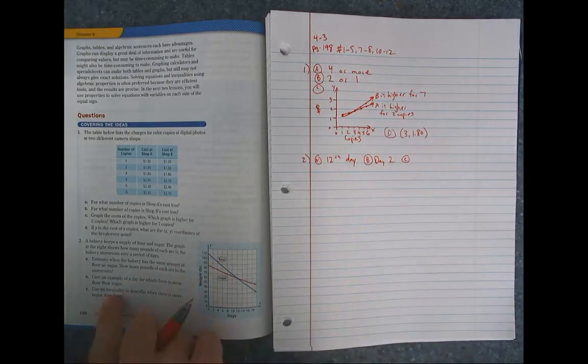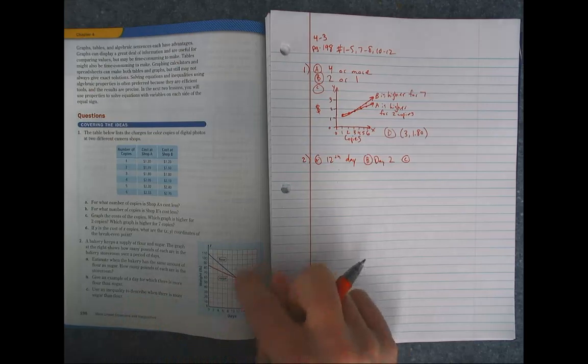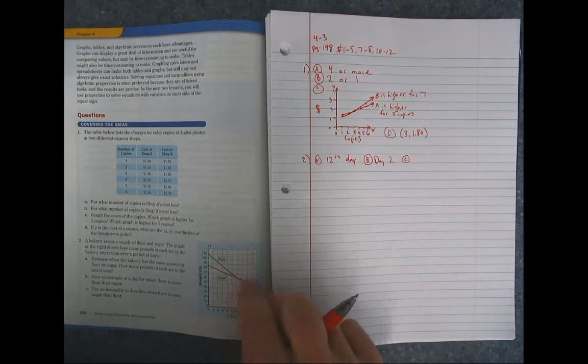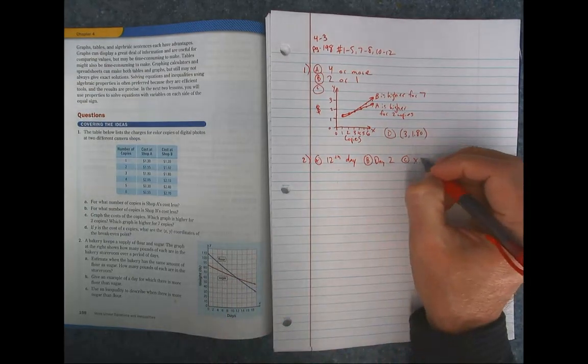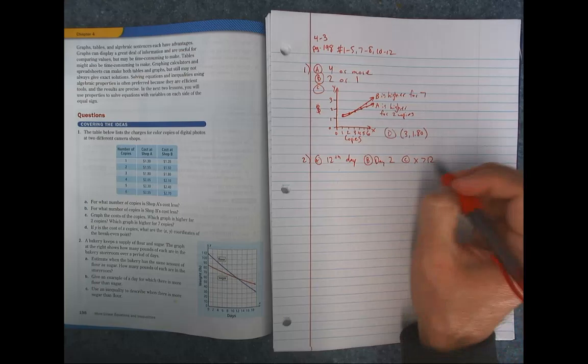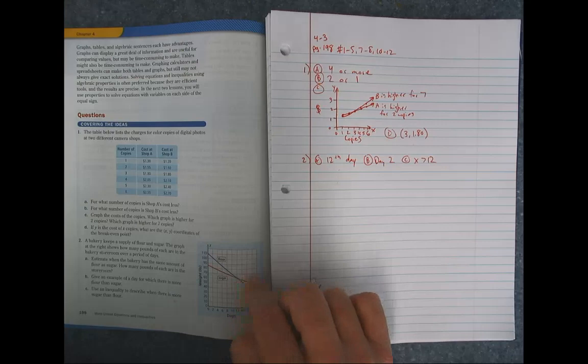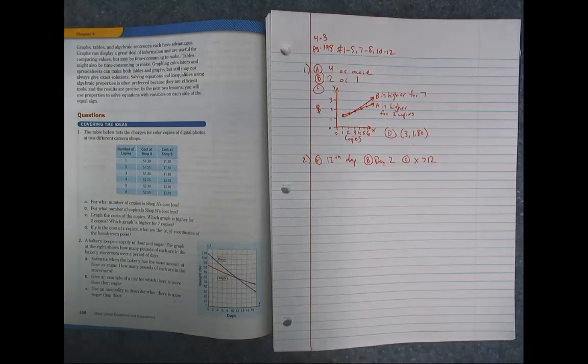And letter C, we're going to use an inequality. So that's a less than or a greater than statement to describe when there is more sugar than flour. So there's more sugar than flour when the x value, or the days, is greater than 12. So from 12 up, there's more sugar. So when x is greater than 12. We wouldn't say equal to because at 12, they're the same. So where is it more sugar than flour? It's everything above 12. x is greater than 12.